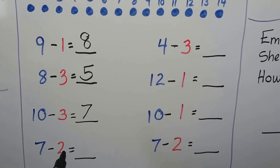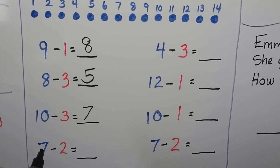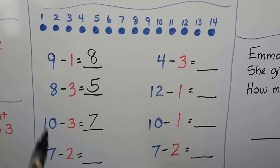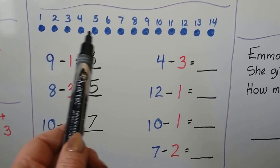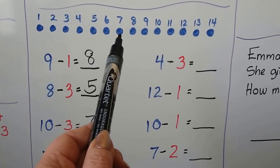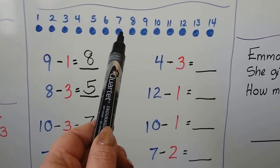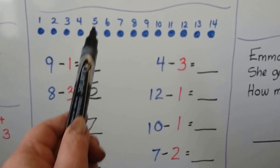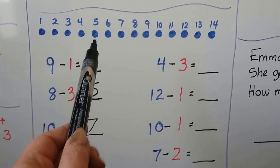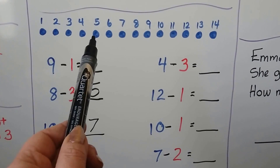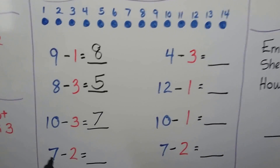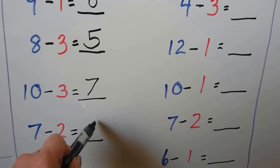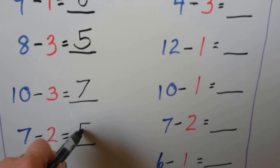7 minus 2. We start at the 7 and count back 2. There's the 7. Now let's count back 2: 1, 2. That brings us to 5. 7 minus 2 is equal to 5.